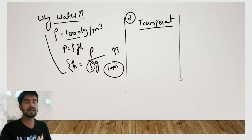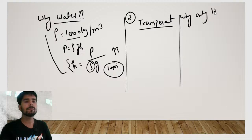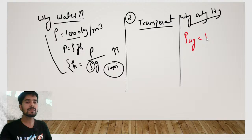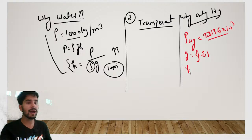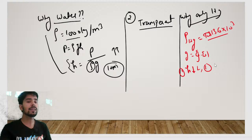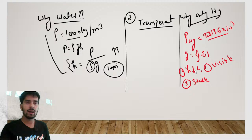The next question is: why do we use mercury? First, the density of mercury is very high — 13.6 into 10 to the power 3 — so the height of the column is lower and manageable. Second, mercury is easily visible, which helps in taking readings. Third, mercury is much more stable than water. Water is unstable, but mercury is stable. Therefore we use mercury in the mercury barometer.